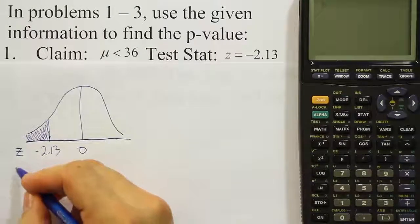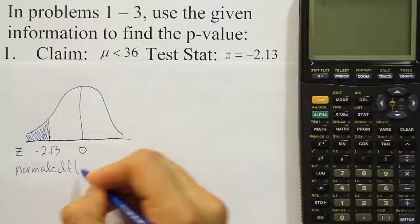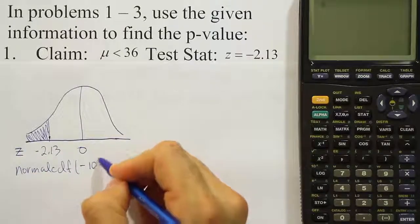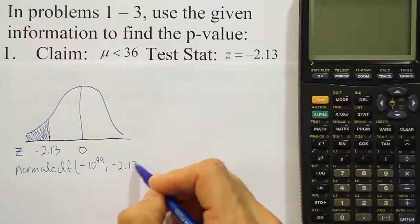And we get the answer here by finding this area. Now to do that in our calculator, we're going to use the normal CDF feature. Normal CDF feature. And we're going to go from negative infinity, which will be negative 10 to the 99th power for our calculator, all the way up to negative 2.13.